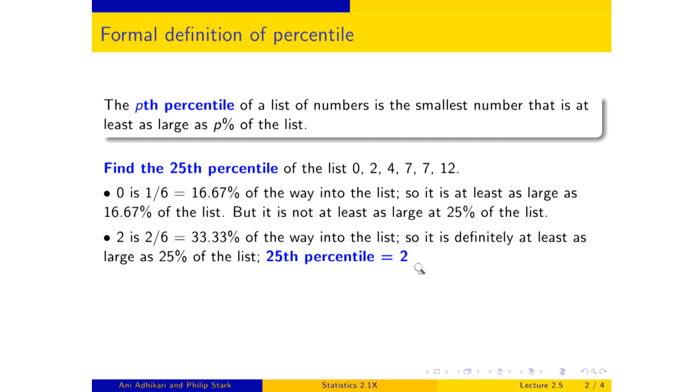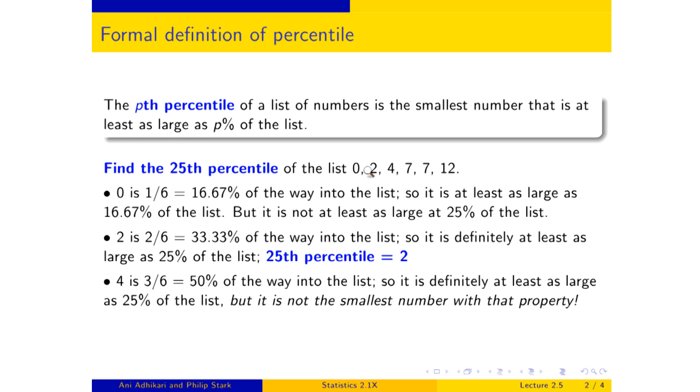And just to make sure that these other numbers aren't really getting into the act, let's take a look at number four. This number is exactly halfway through the list. Three out of six of the entries, 50 percent of the way into the list. So it is as large or more as 25 percent of the list. But it is not the smallest number about which you can say that. It got beaten by two. We said that about two already. And so, because the definition requires the smallest number, two wins. 25th percentile equals two.